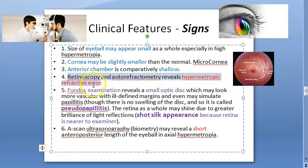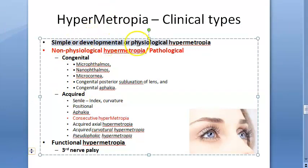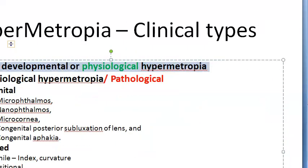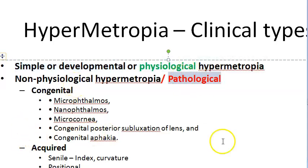Classification of hypermetropia: physiological (also called simple or developmental) — the most common form, due to axial or curvature variation within normal biological range. Pathological — due to conditions outside normal biological variations, with congenital and acquired subtypes. Functional — due to third nerve palsy.